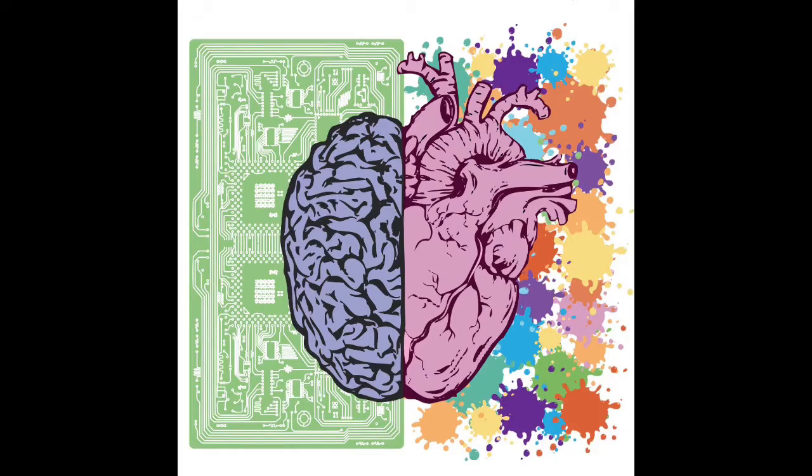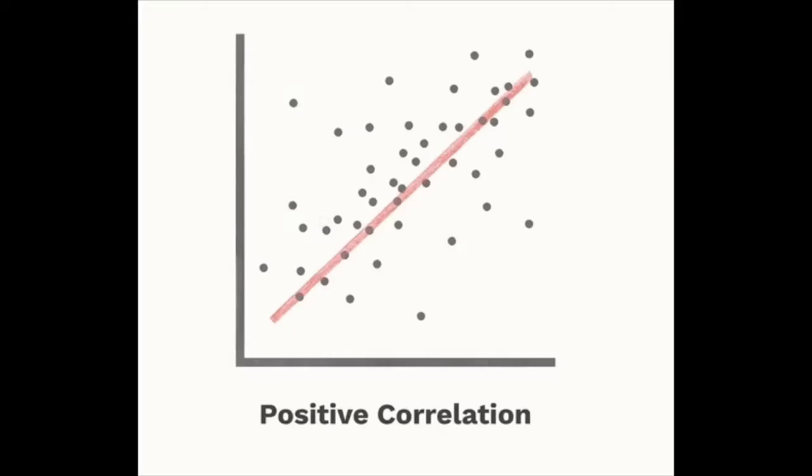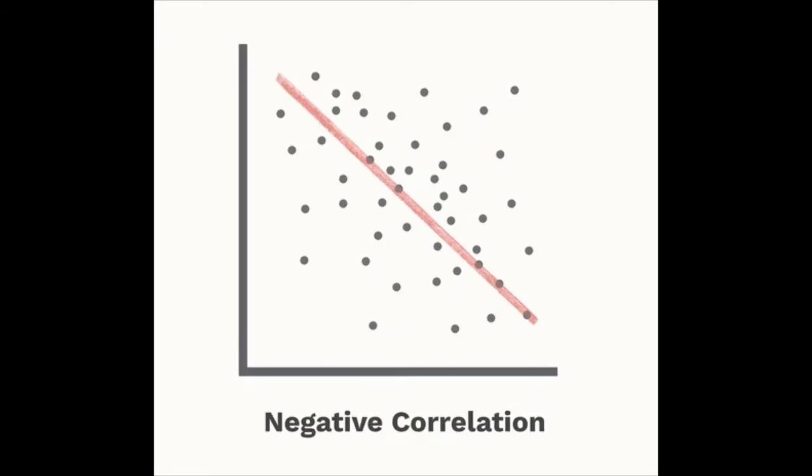At this point we've had a chance to talk a little bit about stress, to define it as a transaction or interaction between the stuff that happens to us and our cognitive and affective appraisal of that stuff — the meaning, in essence, that we apply to the stuff that happens. We've also reviewed the Yerkes-Dodson curvilinear relationship between stress and performance, acknowledging positive linear, negative linear, and in some instances no relationship between stress and performance.